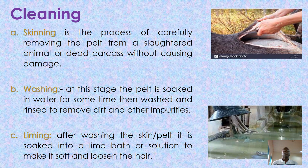After the skin is removed, the second stage is washing. The pelt is soaked in water, then washed and rinsed to remove dirt and other impurities. After washing, it is then soaked in lime — a lime bath — which is a solution that softens it and loosens the hair.